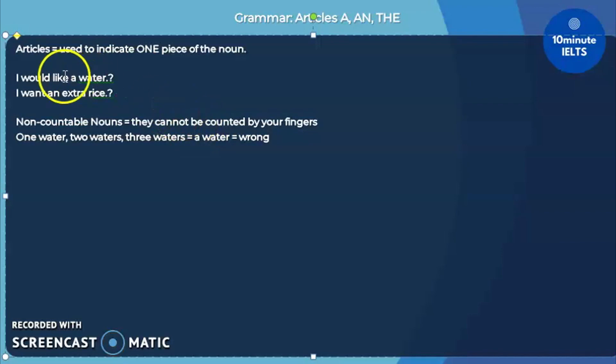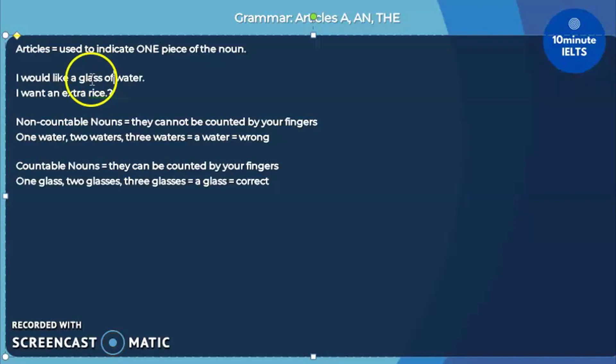But how come a while ago, it sounded correct to use a? That's because we made use of a countable noun. Countable nouns can be counted by your fingers. An example of this would be glass. We could have one glass, two glasses, or three glasses, and it sounds perfectly natural. I would like a glass of water sounds better because we're now referring to glass being the main noun, and water just identifying the type of glass you like. So, I would like a glass full of water, or one glass full of water.